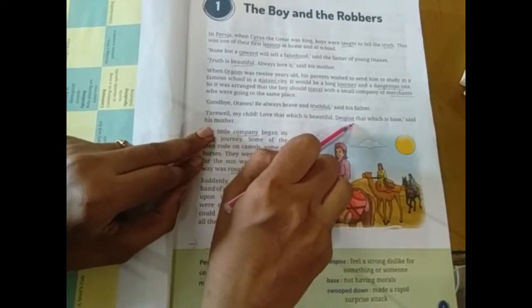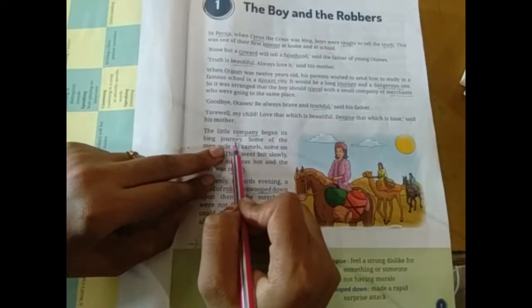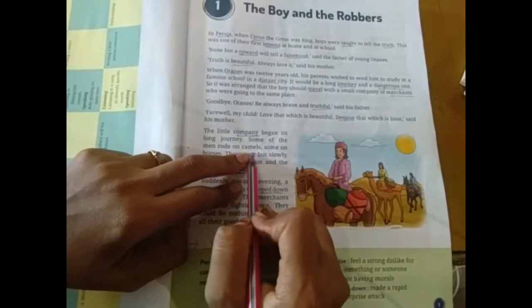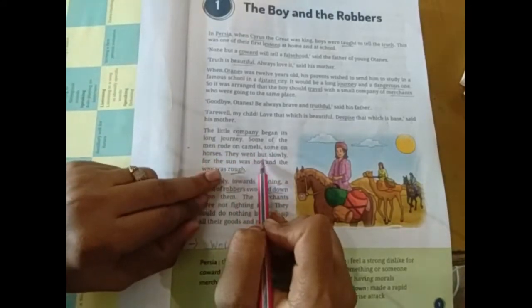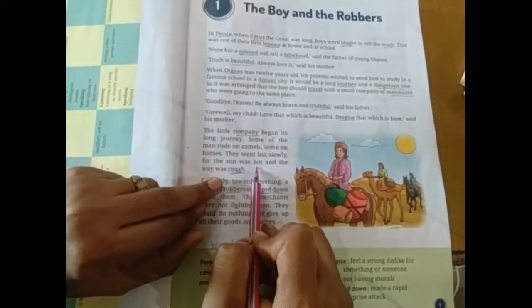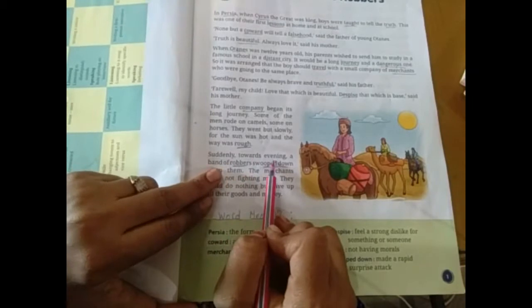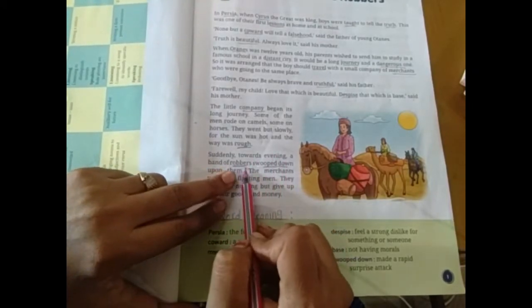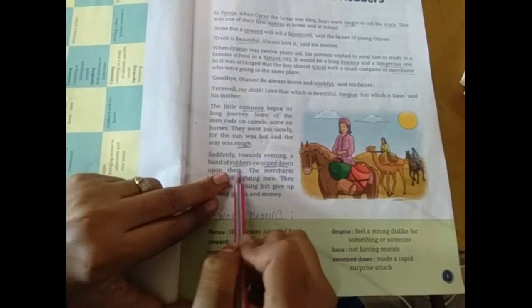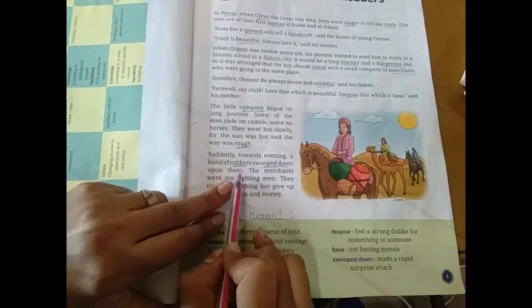The little company began its long journey. Some of the men rode on camels, some on horses. They went but slowly, for the sun was hot and the way was rough. Suddenly, achanak se hi, towards evening, saam ke time pe kya hua? A band of rovers, souped down upon them. Souped down ka matlab hota hai, achanak se hi, humbla karna. Unone, beech mein, lutaar hun mile, kab? Evening ke time pe? Unone achanak se hamla kiya hai.